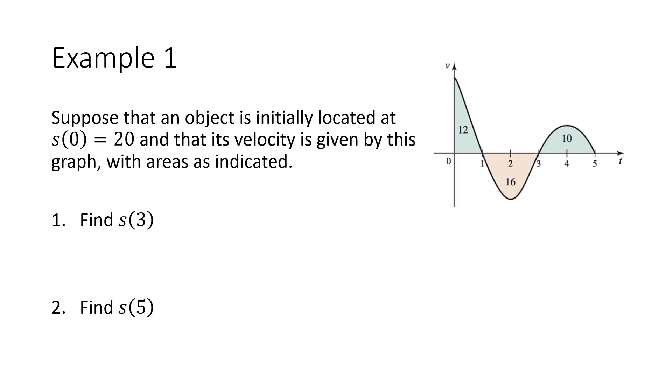So here's an example. Let's say we have this velocity graph, so we see that our axis is labeled v here, so this is a graph of velocity, and we've got some areas labeled. And we're also given that s(0) equals 20. That's not information that we would be able to get any other way. That's not information that we can read off of this graph, because this is a graph of velocity. So we would have no way of knowing where this object is located at time 0. But now that we know where the object is located at time 0, we can figure out where the object is located at future times.